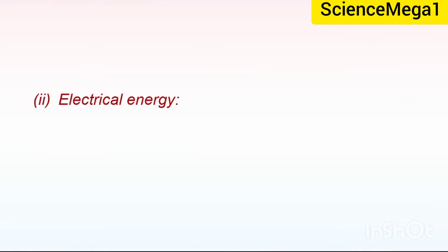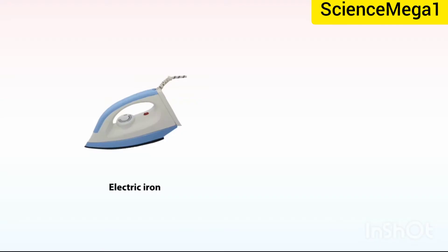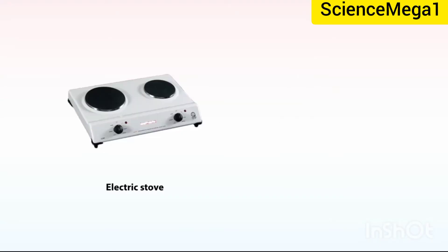Electrical energy. Let's see how electrical energy is used. Electrical energy is widely used as a source of heat. For example, it is used to operate a lot of electrical appliances such as electric iron, kettles, stoves, and hair dryers.